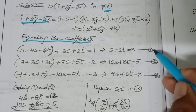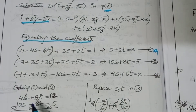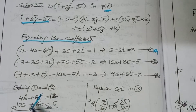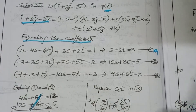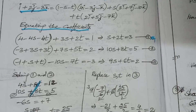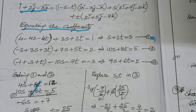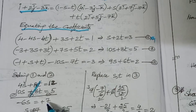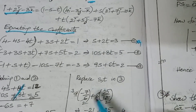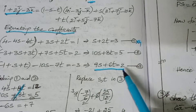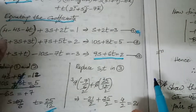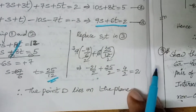Solving equations 1 and 2: multiplying the first equation by 4 gives 4s plus 8t = 12, and the second gives 10s plus 8t = 5. Cancelling 8t, we get 6s = minus 7, so s = minus 7/6. Substituting s into equation 3 gives t = 27/12. Replacing s and t in the third equation, we get LHS equal to RHS. Therefore, point d lies on the plane.